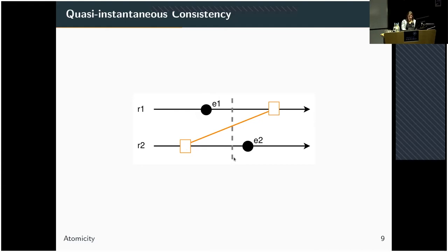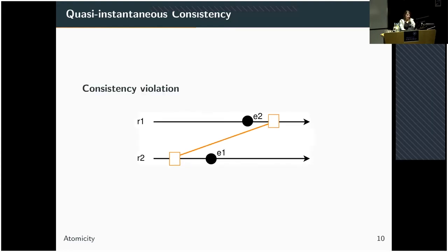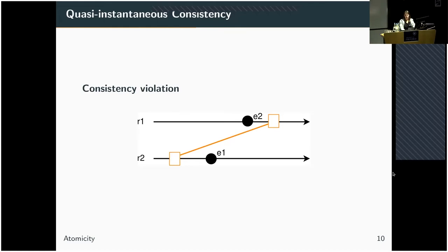How does it look if the snapshot isn't consistent? Here we also first acquire region 2 and then region 1. The problem is that event E1 happens after region 2 has already been copied, then event E2 happens, and then region 1 is copied. At least in the time frame we are observing, there isn't any state at which the memory contents caused by E2 were co-existent with memory contents where E1 hasn't happened yet. Therefore, we get a violation, which could again result in a list inconsistency — missing a link or seeing wrong links.